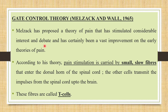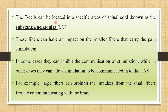The next important theory — which may even be asked in essay questions — is the Gate Control Theory, put forward by Ronald Melzack and Patrick Wall in 1965. Melzack proposed a theory of pain that stimulated considerable interest and debate and was a vast improvement on earlier theories. According to this theory, pain stimulation is carried by small, slow fibers entering the dorsal horn of the spinal cord. Other cells, called T cells or transmission cells, transmit impulses from the spinal cord up to the brain. These T cells are located in a specific area of the spinal cord known as the Substantia Gelatinosa.